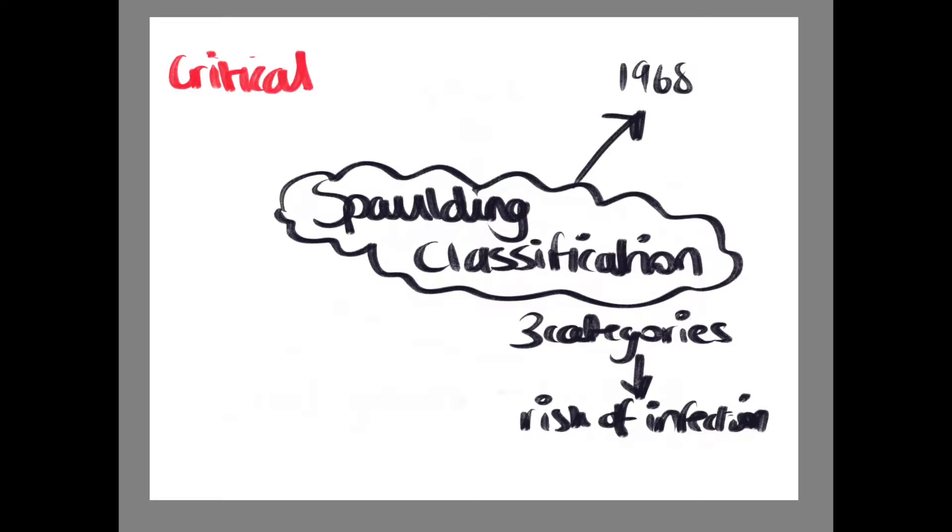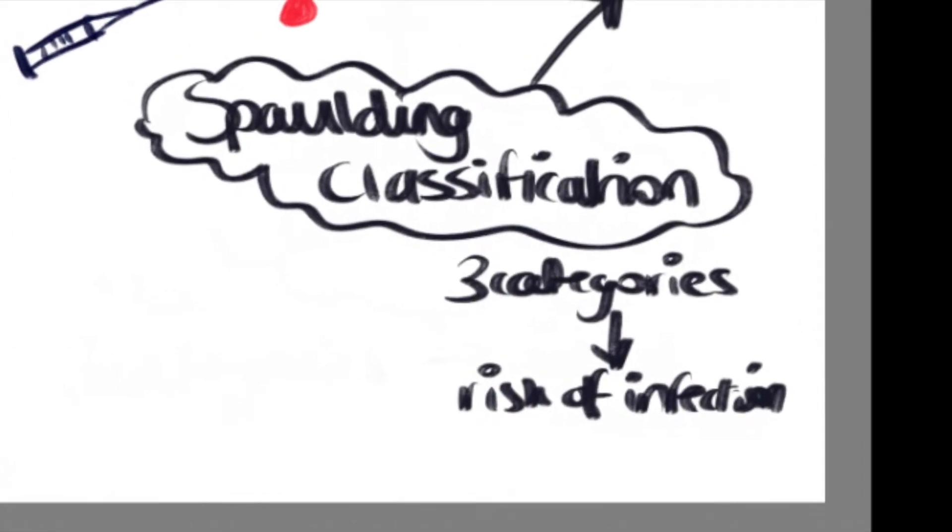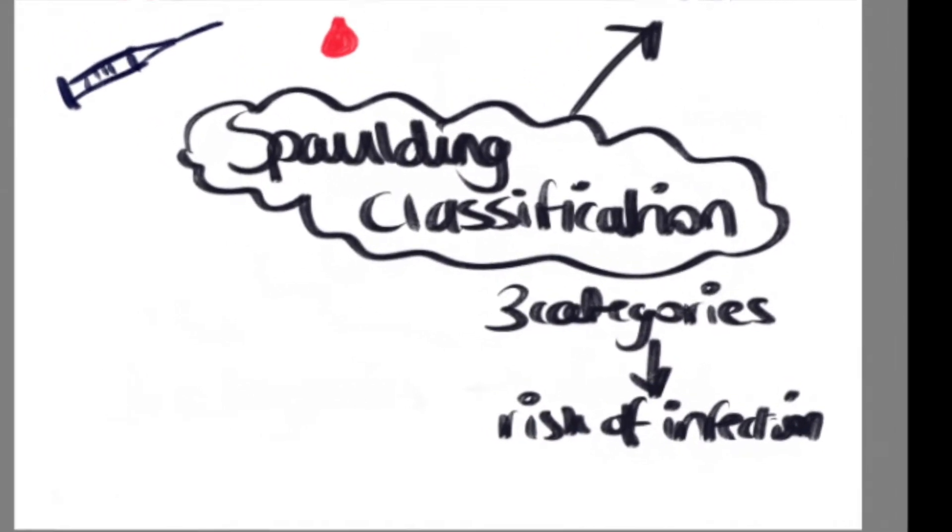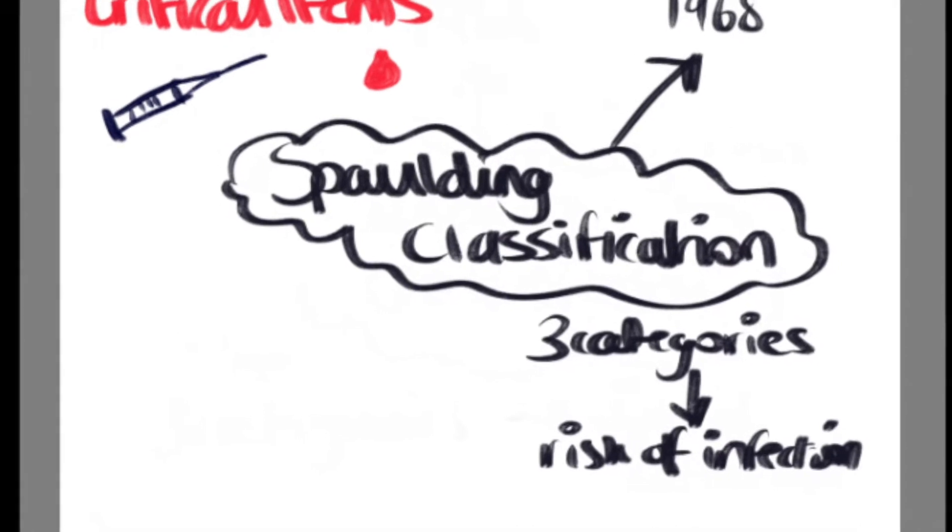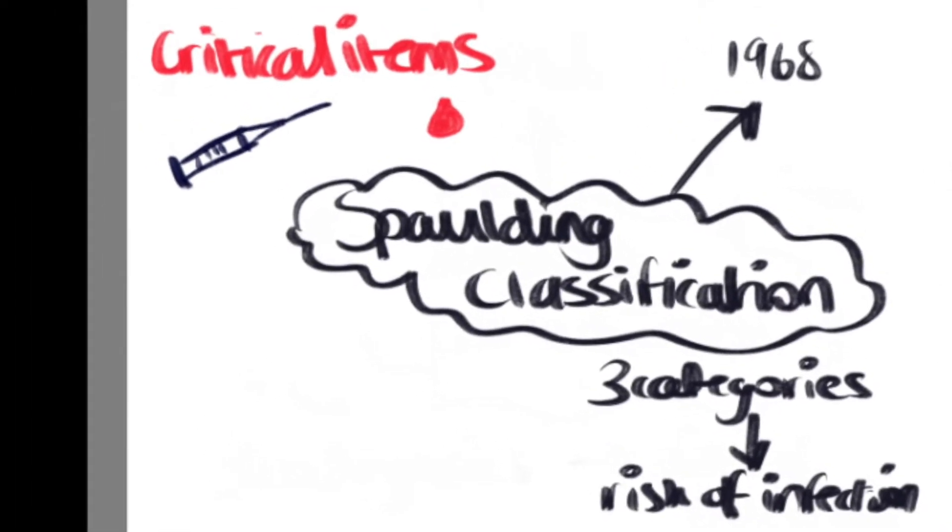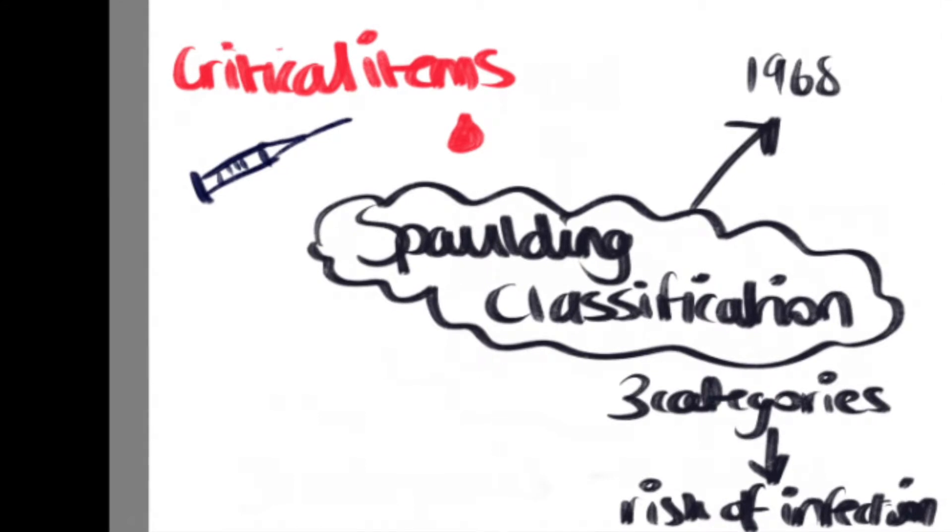Critical items are devices that enter a sterile environment such as the vascular system. Therefore, if the equipment harbors microbes, then the risk of infection is serious, and so it is critical that they remain sterile. Devices include cardiac or urinary catheters and needles.